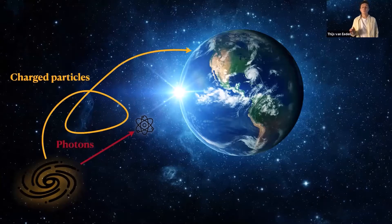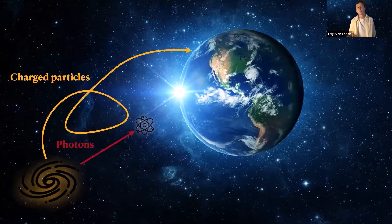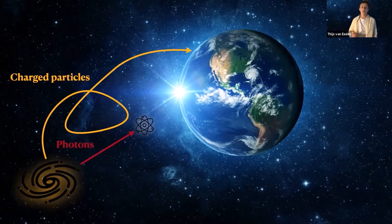The majority of particles that arrive here on our planet are charged, but charged particles follow a curved trajectory due to the magnetic fields present in our universe, and when we detect them here on Earth, it's difficult to point back to where they came from.